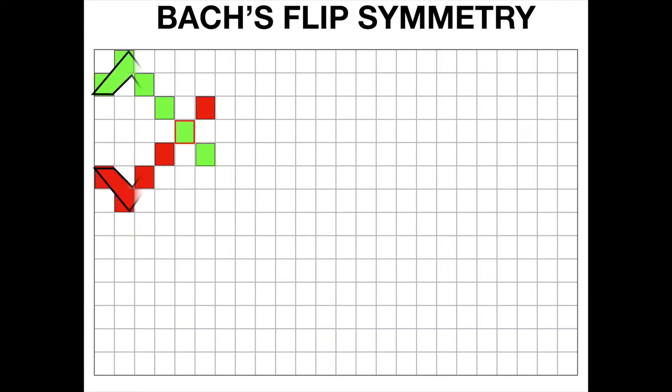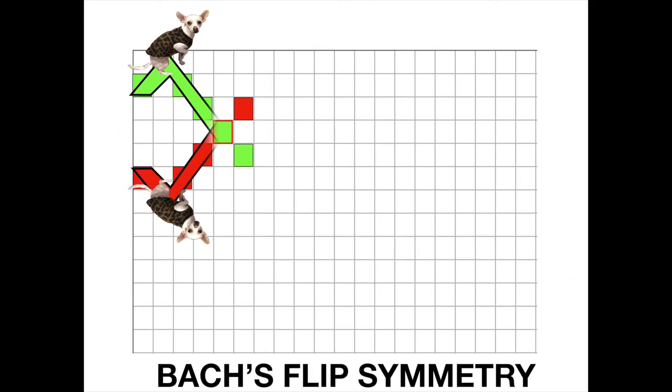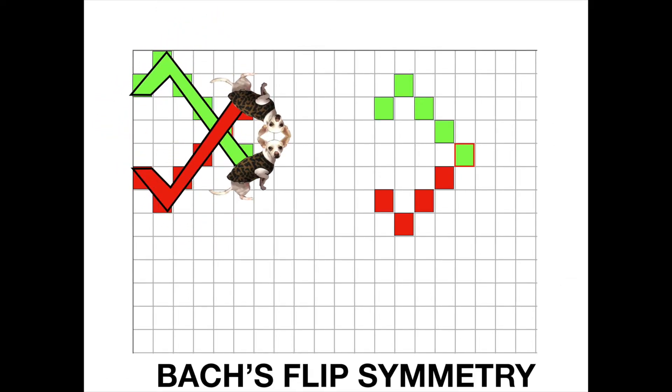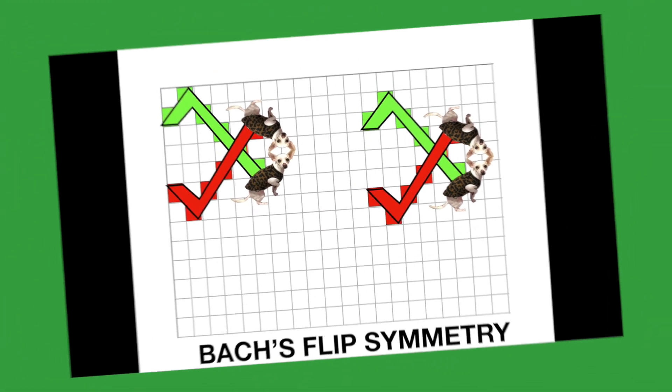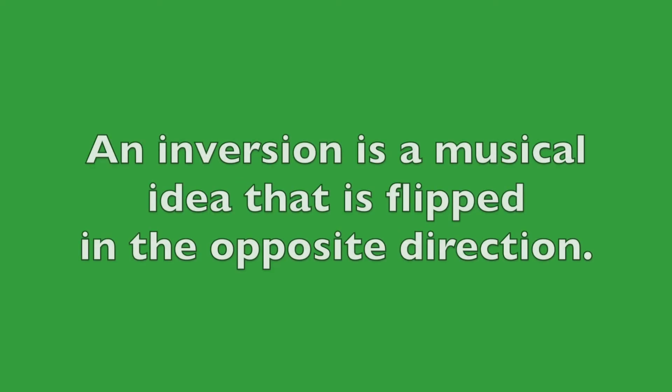Bach combines the two melodies together, one right side up and one flipped upside down. Let's hear that one part again with some help from Porkchop. In music, when we take a musical idea and flip it upside down, we call that an inversion. An inversion is a musical idea that is flipped in the opposite direction.